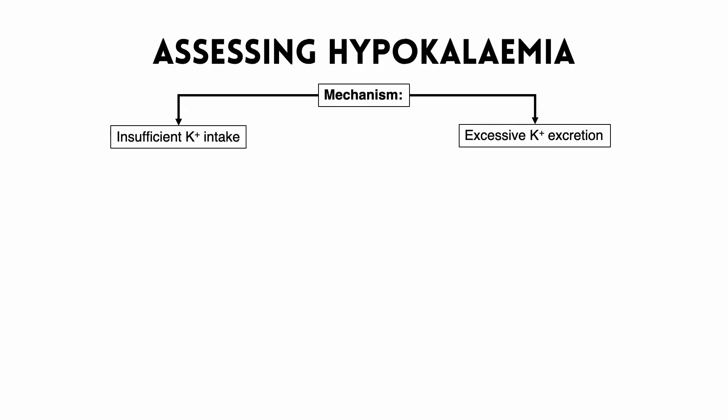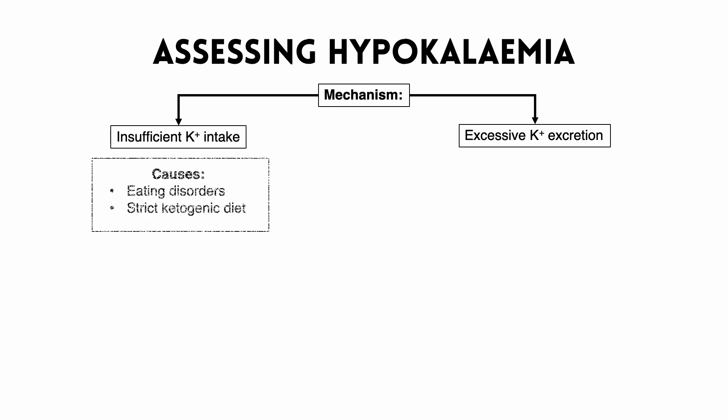There are two main mechanisms which can cause hypokalemia. The first is insufficient potassium intake and the second is excessive excretion of potassium. Insufficient potassium intake is very uncommon and only really occurs in very strict diets such as those in people with eating disorders including anorexia nervosa and bulimia nervosa, and also those on a strict ketogenic diet.